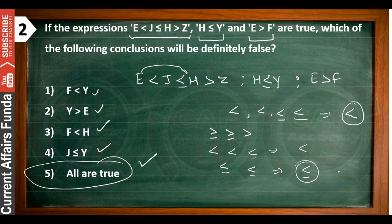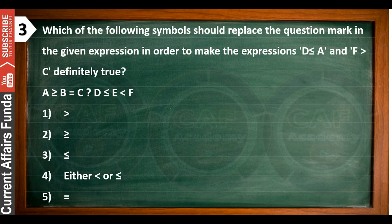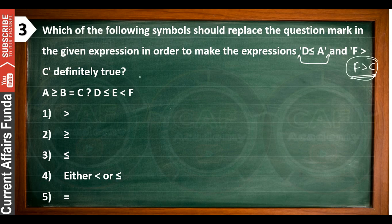So when there is a type change in questions, our timing will also change accordingly. For this set of 5 questions, on average you should take about two and a half minutes. Now let's move to the next question. In question 3, it is asked: which of the following symbols should replace the question mark in the given expression in order to make the expression — there is a blank space between D and C — so I need to fill a symbol there, such that D is less than or equals to A, and F is greater than C, both become definitely true.